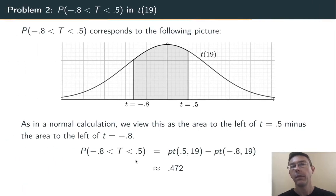So the area of that shaded region is 0.472. And the probability of randomly getting a t-score between negative 0.8 and 0.5 in t of 19 is about 47.2%.